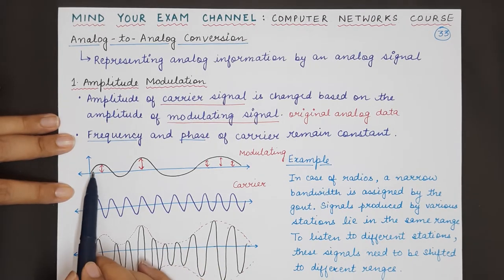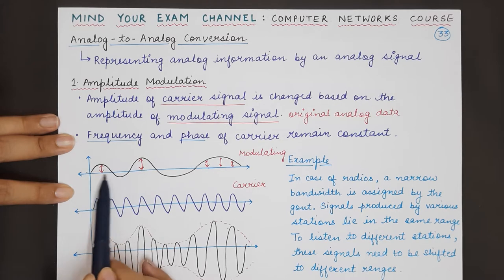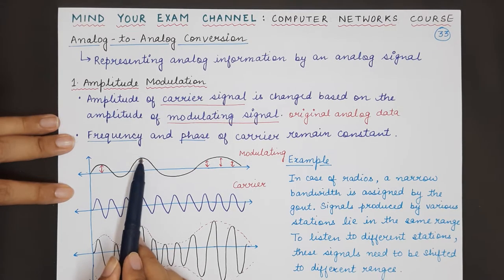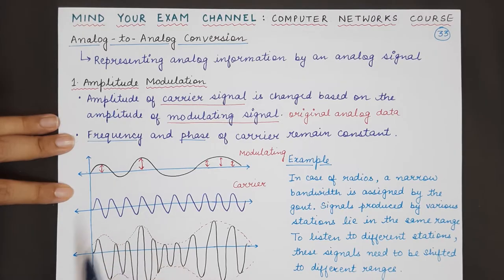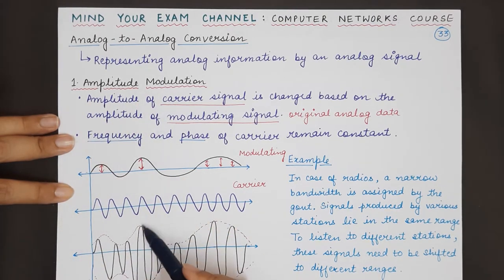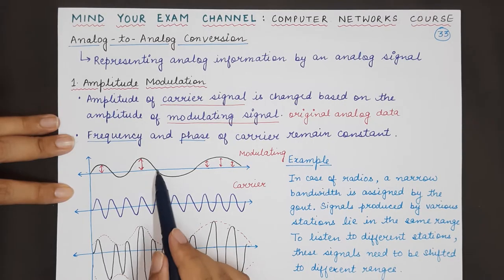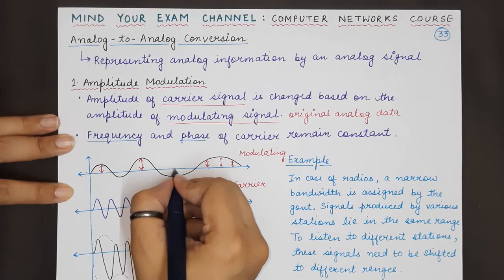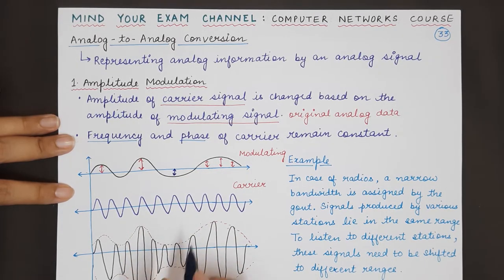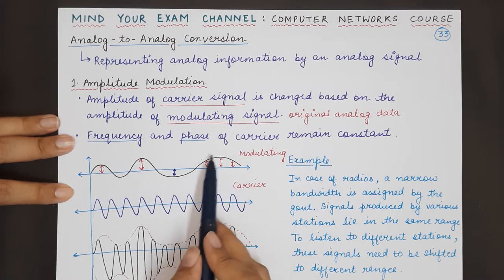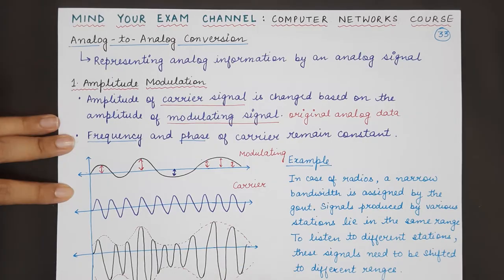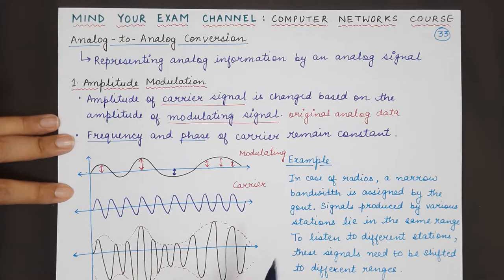As you can see here, in this time slot, the amplitude of the original signal is at a particular voltage level. At this point the amplitude has increased, which is why in the resulting modulated signal, at this particular time, the amplitude of the carrier signal has been increased. Then when the amplitude has again increased, the amplitude of the carrier signal has also increased in the final wave obtained after amplitude modulation.